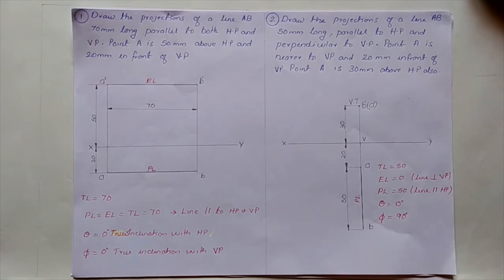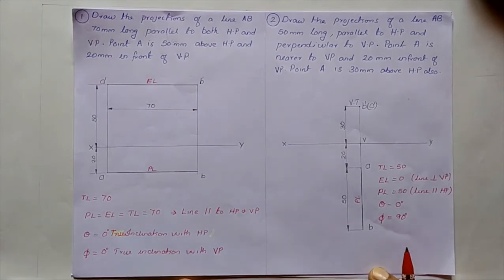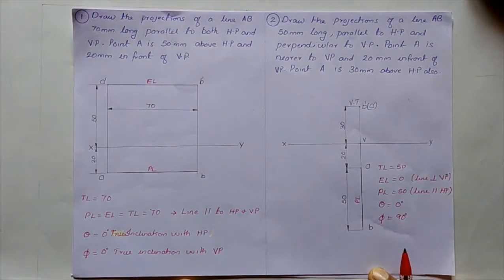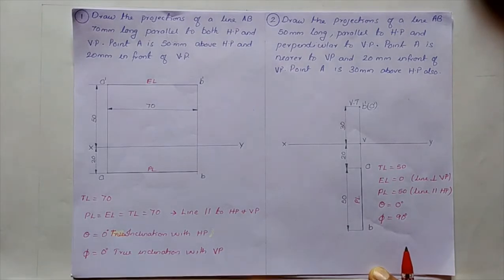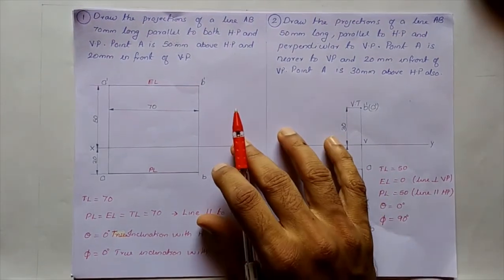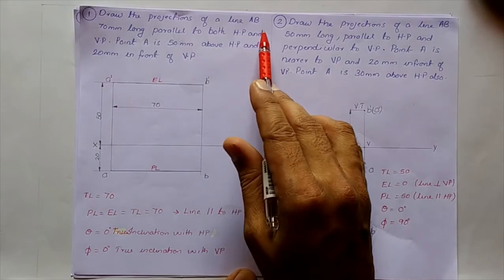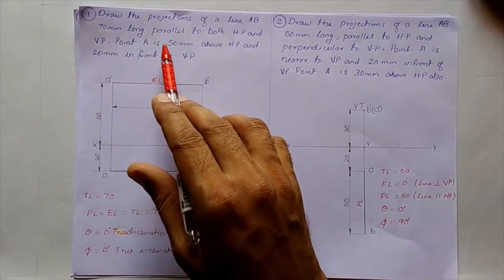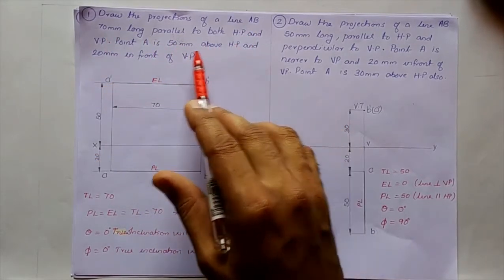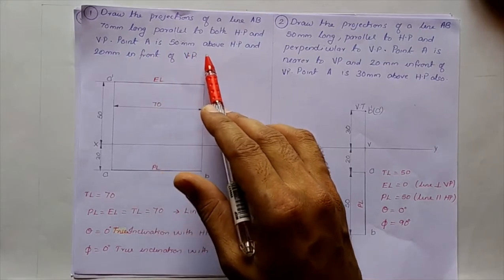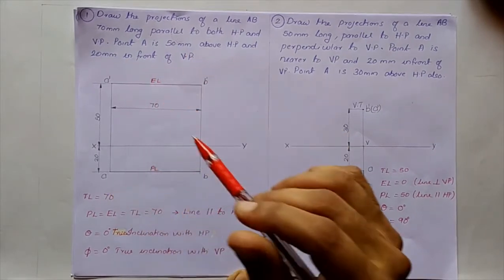Now we shall have a quick review of the previous problems we have done in projection of lines, from problem number 1 to problem number 5. We shall see some other points related to these problems. So the first question was: draw the projections of a line AB 70 mm long, parallel to both HP and VP. Point A is 50 mm above HP and 20 mm in front of VP.